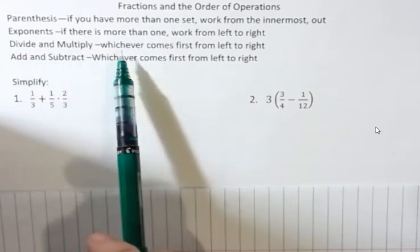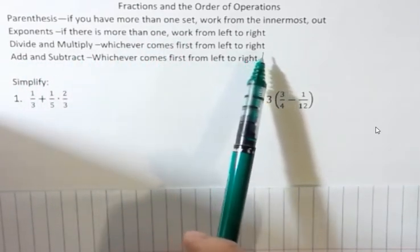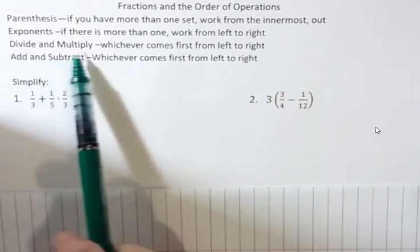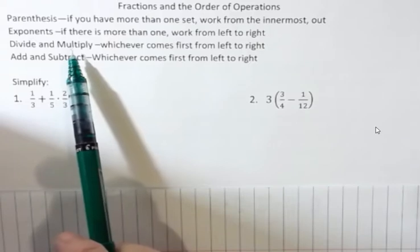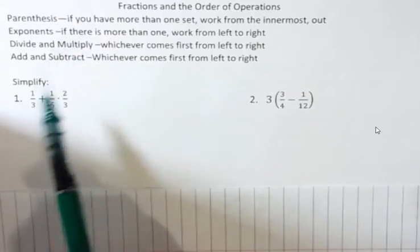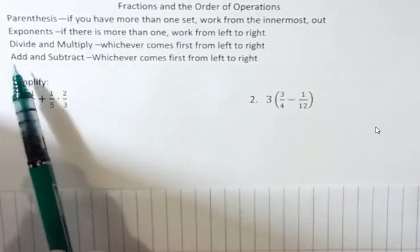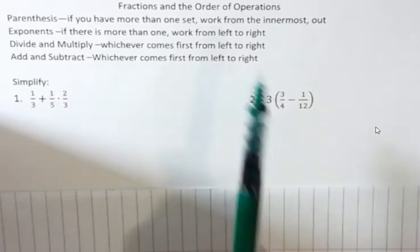Divide and multiply whichever comes first from left to right. People say multiply or divide a lot. It's confusing because people always think multiply comes first, but it doesn't come before division unless it's before it left to right. And then add and subtract whichever comes first from left to right.